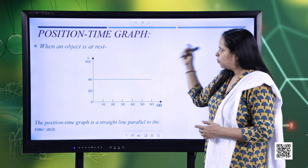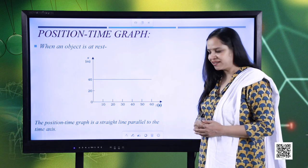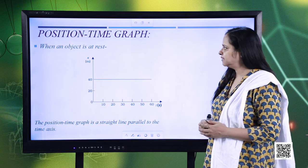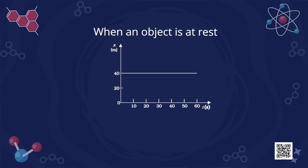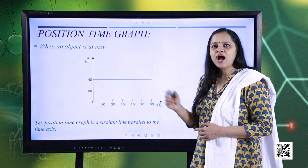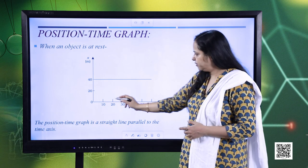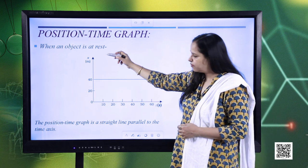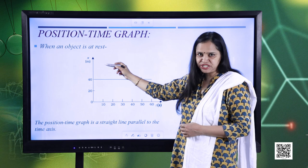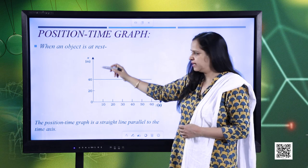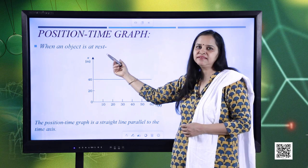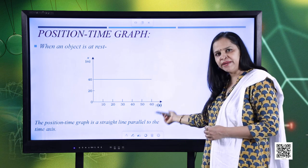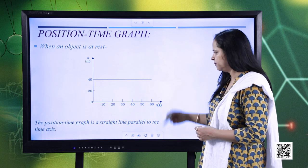Now let us see how to plot a position-time graph with reference to motion. The first case I consider is when the object is at rest. Along the x-axis we consider the time, and along the y-axis we plot the position. The position can be in terms of meters, kilometers, whatever. Same way, the time can be in terms of seconds, minutes, or hours.